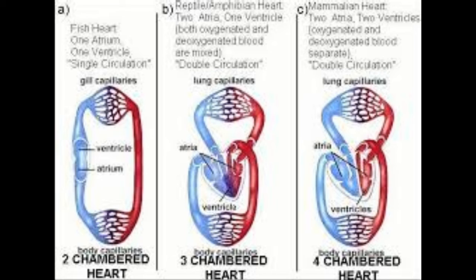In the case of frogs, they have a three-chambered heart, and double circulation is present. However, there is a disadvantage: the auricles are two but the ventricle is only one. So right and left ventricles are joined, causing mixing of pure and impure blood. Although there is double circulation, the organism does not receive fully pure blood circulated all over the body.